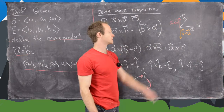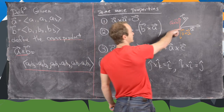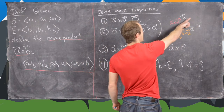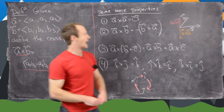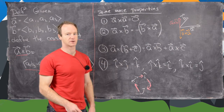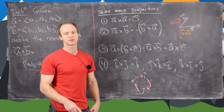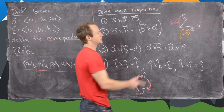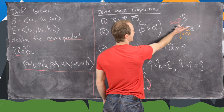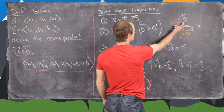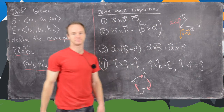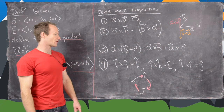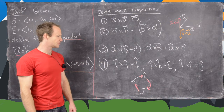Geometrically, if a points in one direction and b in another, then a cross b is a red vector pointing up while b cross a is an orange vector pointing down. This is governed by the right-hand rule: take your right hand, point your index finger in the direction of a and your middle finger in the direction of b, and your thumb points in the direction of a cross b.